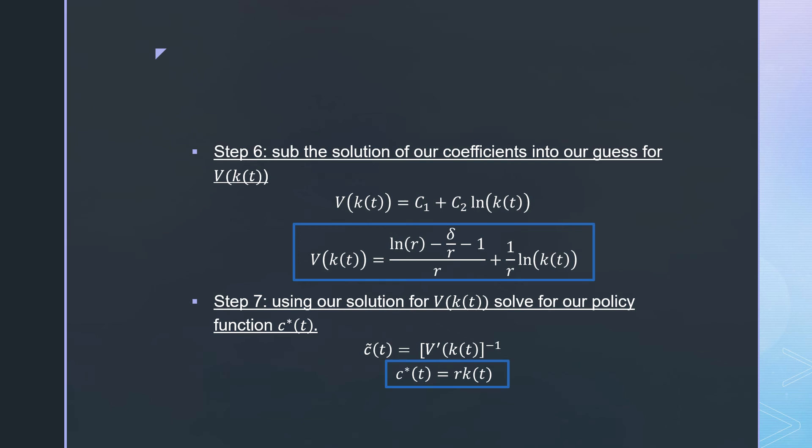Then we're going to use this solution to solve for our policy function c_t. We're just plugging in what the derivative is of our guess evaluated at these proper coefficients, and we get our policy function which is equal to r times k(t), which is the cake size at time t.